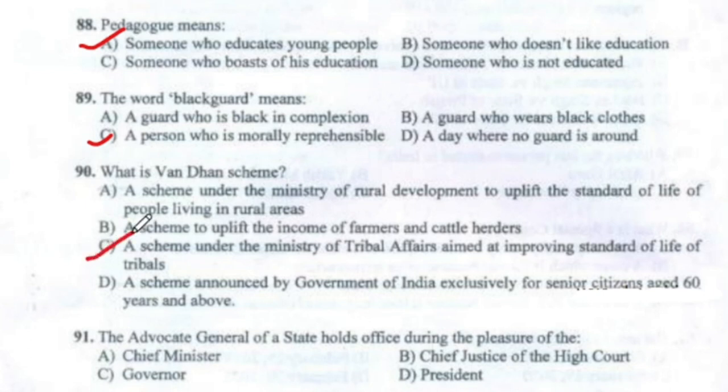Question 91: The Advocate General of a state holds office during the pleasure of the Governor.